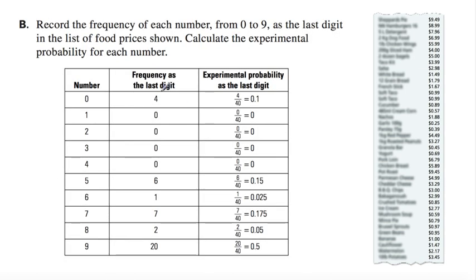But in reality, good friends, you record the frequency of each number from 0 to 9 as the last digit in the food prices. Now you calculate the experimental probability for each number. As you peruse through this list right here, you see that number 0 happens 4 times out of 40, which is 10%, 0.1. Number 1, 0. Number 2, 0. Number 3, 0. Number 4, 0. They don't show up at all.